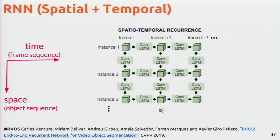Now I'll spend more time on our own work from UPC. The results at the beginning were from our model. Our model is totally based on RNNs — it's the first model that is fully end-to-end trained and can track multiple objects. The key innovation is that we don't only have recurrence in time, but also recurrence in space.